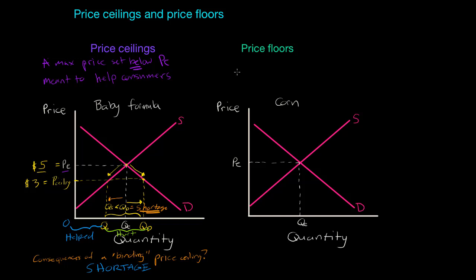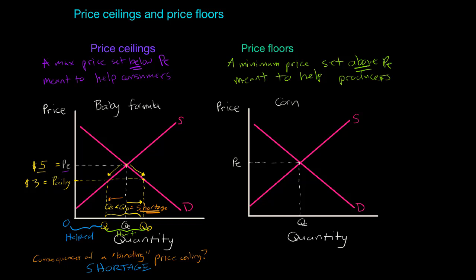So we've discussed how a price ceiling can cause a disequilibrium in which the quantity demanded is greater than the quantity supplied. Let's move on to price floors. A price floor is a minimum price, usually set above equilibrium, meant to help producers. This can be a confusing point — a price ceiling is always set below equilibrium, and a price floor is always set above equilibrium, if these price controls are intended to actually have an effect on the market. It's useful to think of this as an upside-down house: the ceiling is below equilibrium on your graph and the floor is above equilibrium.